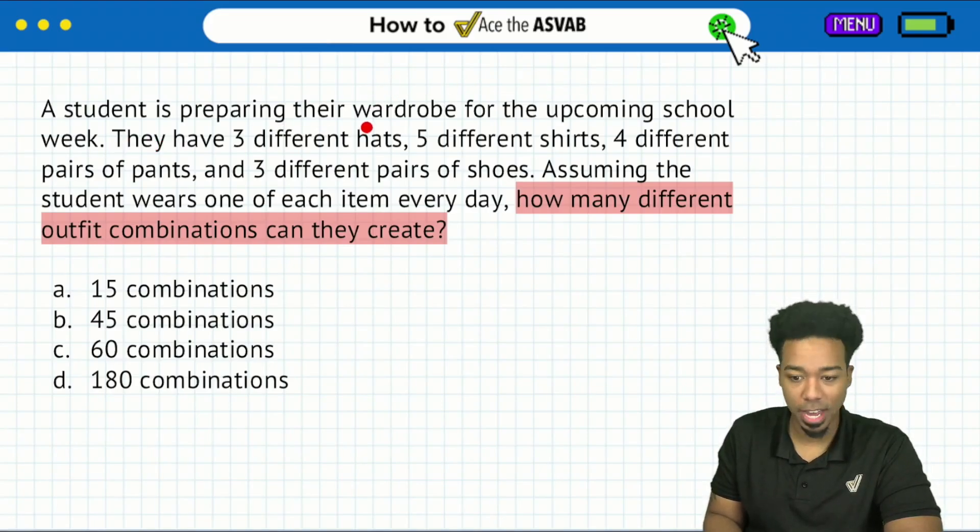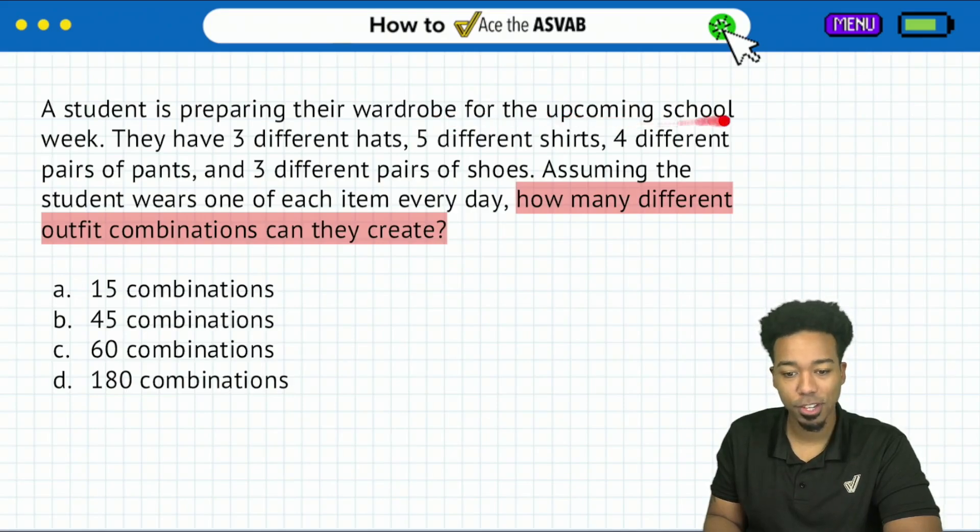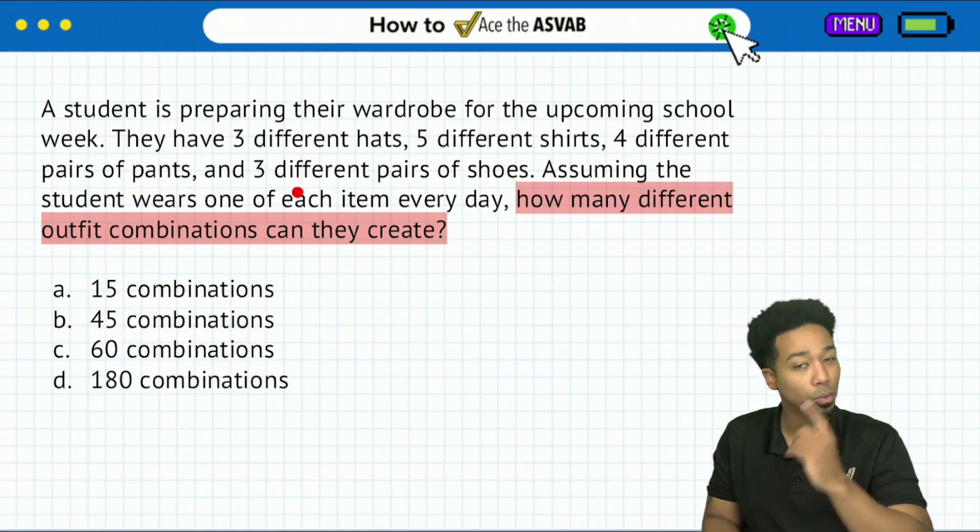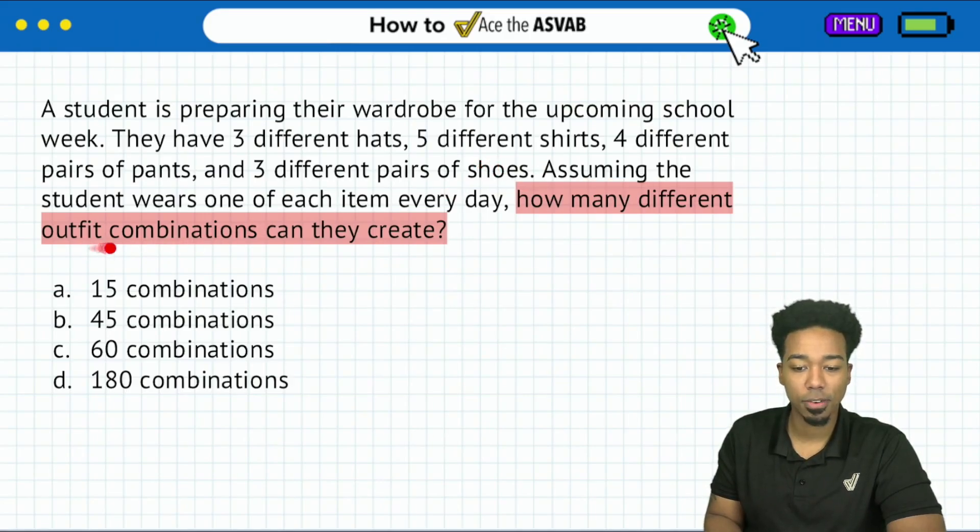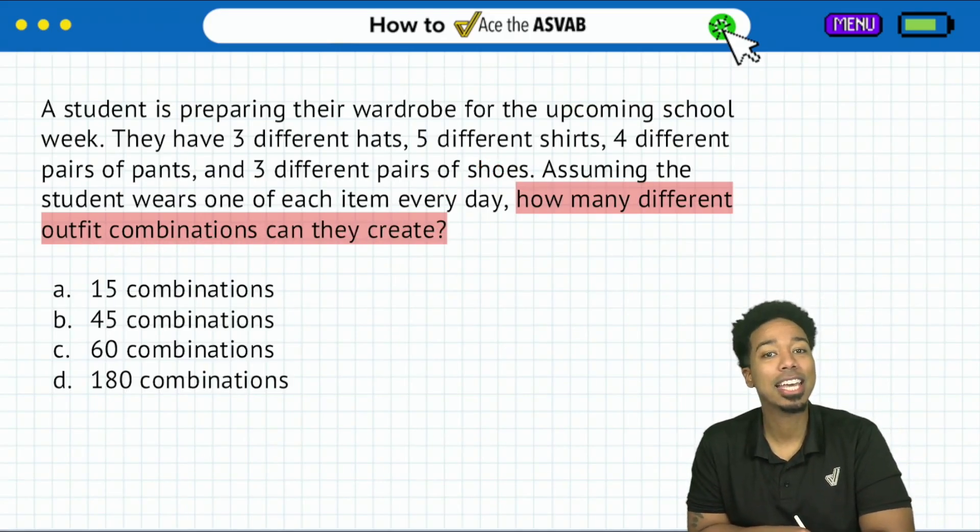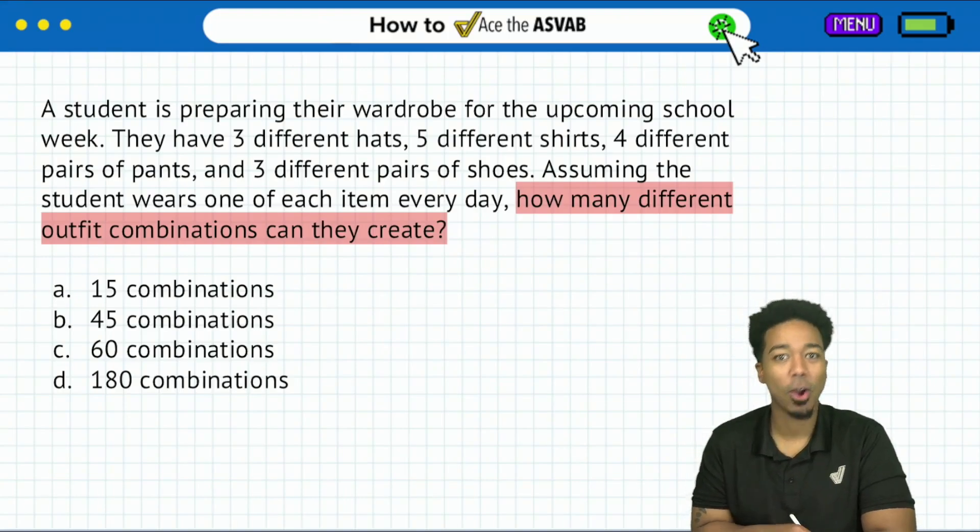They have three different hats, five different shirts, four different pairs of pants and three different pairs of shoes. Assuming the student wears one of each item every day, how many different outfit combinations can they create? All right.